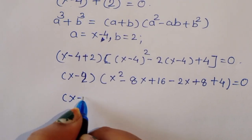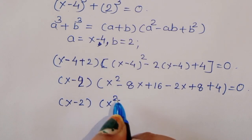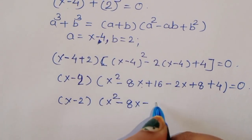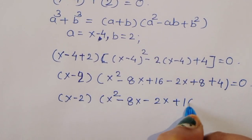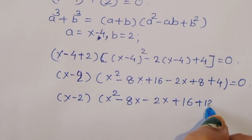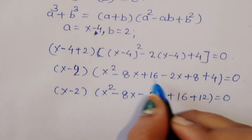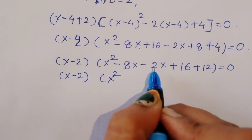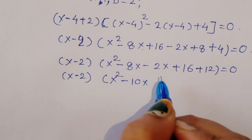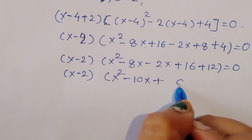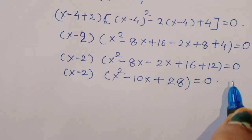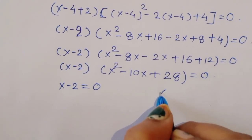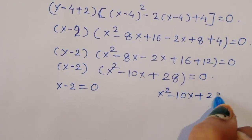Now we can write (x - 2) times (x² - 8x - 2x + 16 + 12) = 0. Combining like terms: -8x and -2x gives -10x, and 16 + 12 gives 28. So we get (x - 2)(x² - 10x + 28) = 0.